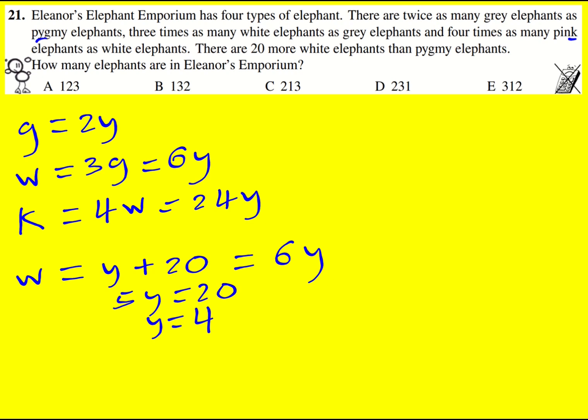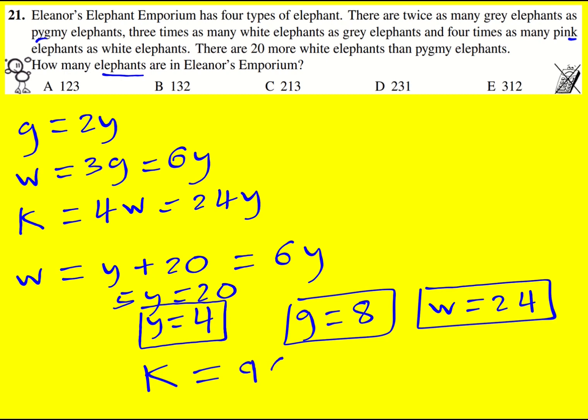Well on our way now because we can work out all the other ones. We're trying to work out how many elephants in total, so Y is equal to 4. Therefore, G is going to equal 8 because I'm just doubling it. W is going to equal 24. We already knew that from the fact that it was 6 times as many, but also that there are 20 more elephants. And then finally, the number of pink elephants is 24 times 4. So I'm just going to double it to 48, double again 96.